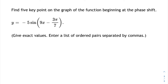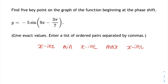The 5 key points for a sine start at its x-intercept. Because this has a negative 5 coefficient, the next point is going to be a minimum, then another x-intercept, then a maximum, and then the last x-intercept. If this were a positive coefficient, it would go x-intercept, maximum, x-intercept, minimum, x-intercept. So basically, the negative makes the minimum and maximum flip-flop.